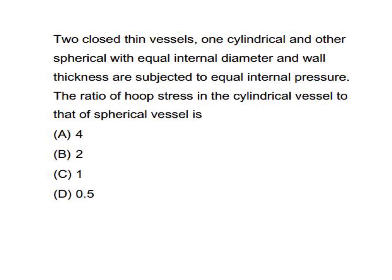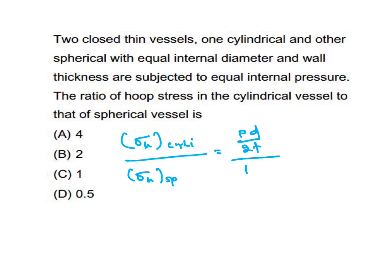Two thin-walled vessels, one cylindrical and one spherical, with equal internal diameter and wall thickness, are subjected to equal internal pressure. The ratio of hoop stress in the cylindrical vessel to that of the spherical vessel: σ_h(cylindrical) / σ_h(spherical) = (pd/2t) / (pd/4t) = 4/2 = 2. B is the answer.